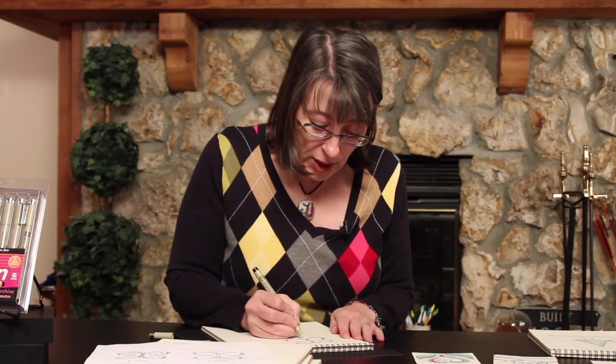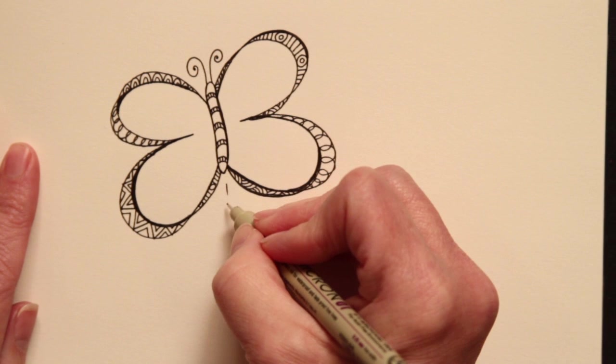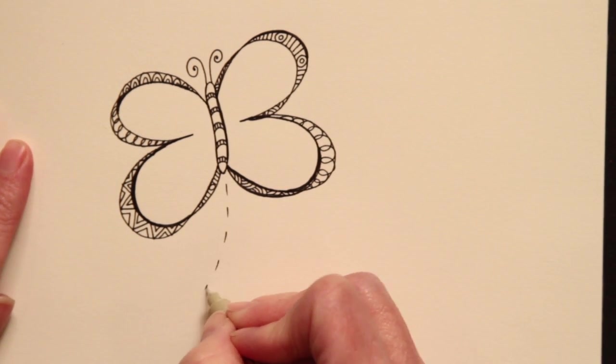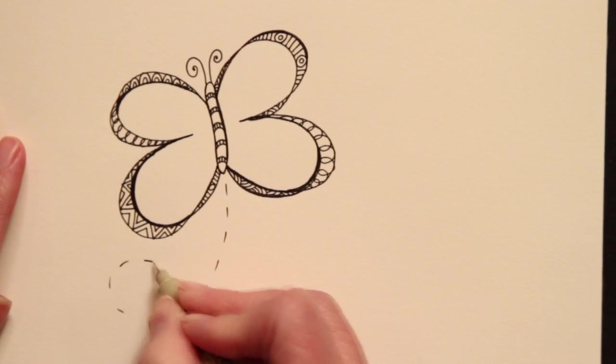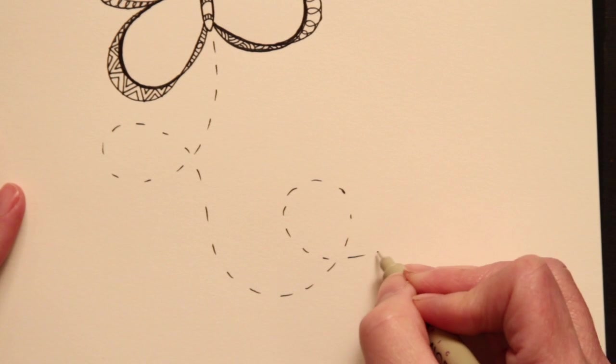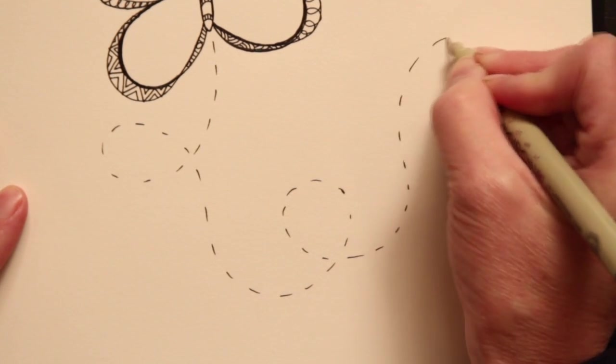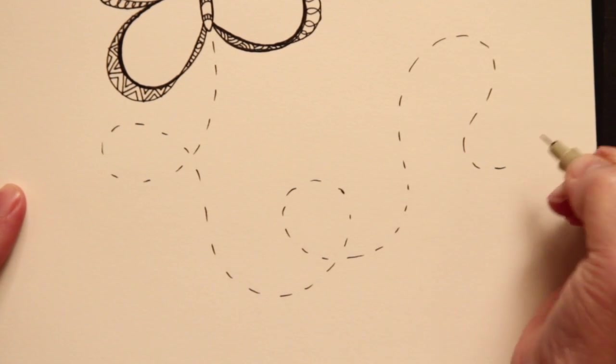Then part of the finishing touch is a butterfly trail. And I like to do a butterfly trail that's just a bunch of dashes. But it makes it look like the butterfly has been spinning around all over.